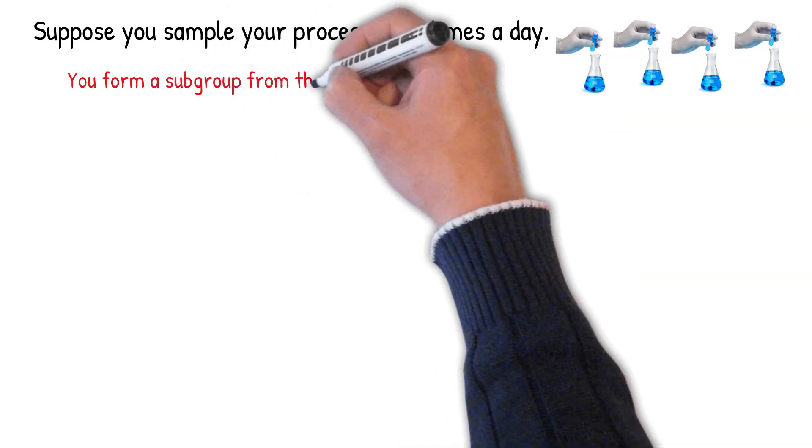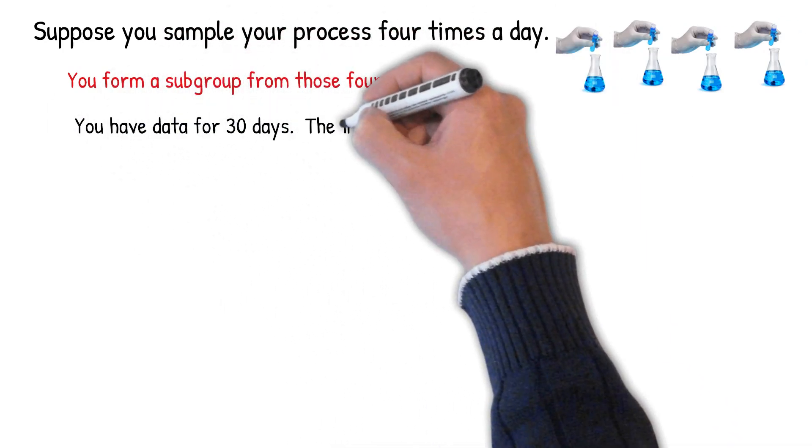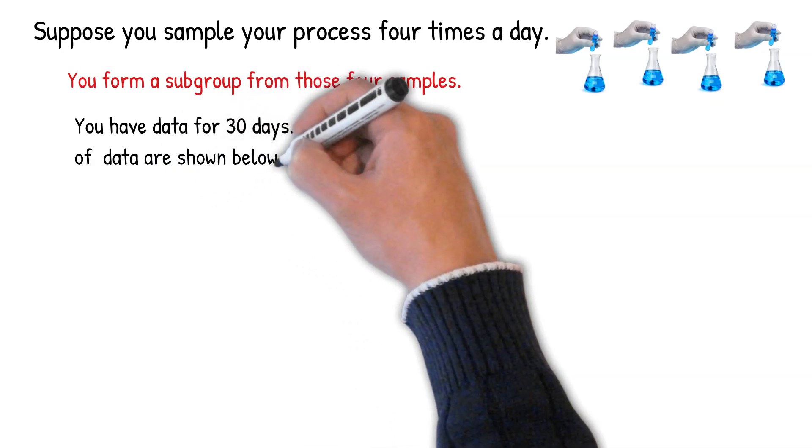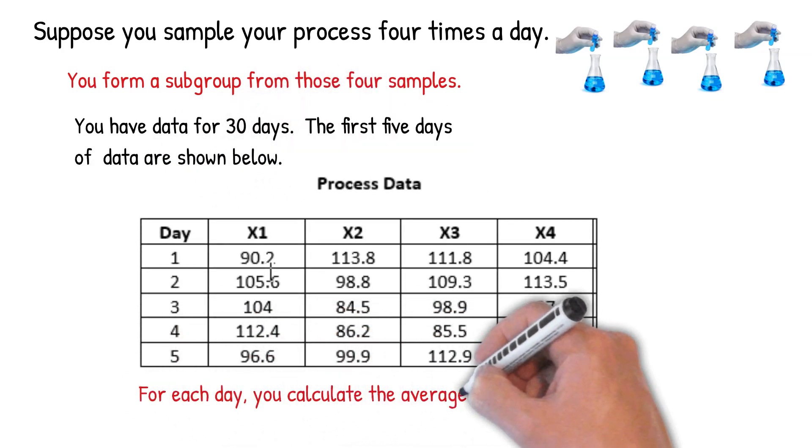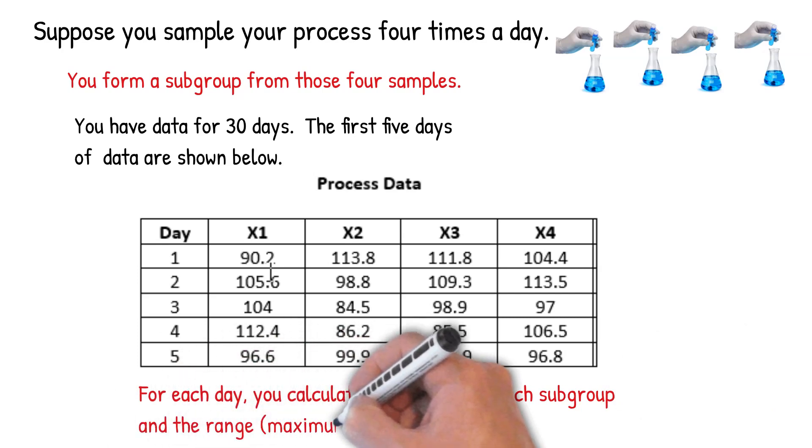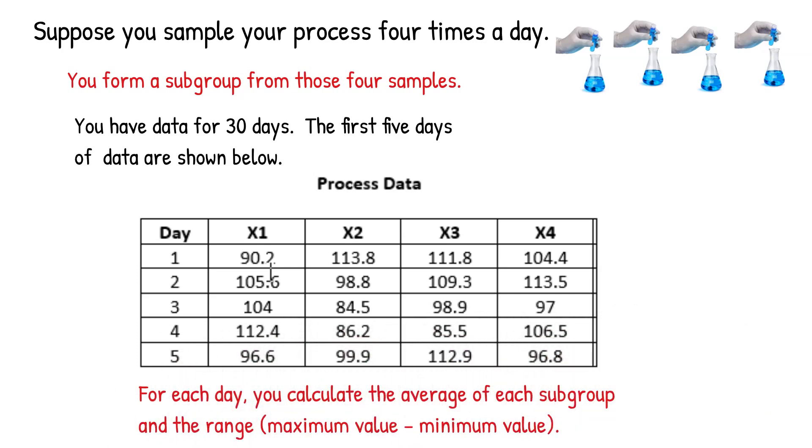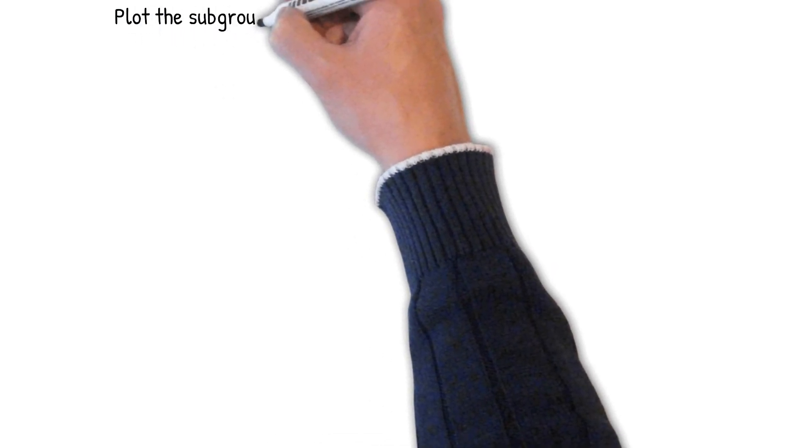Suppose you sample your process four times a day. You form a subgroup from those four samples. You have data for 30 days. The first five days of data are shown below. For each day, you calculate the average of each subgroup and the range as the maximum minus the minimum for each one.